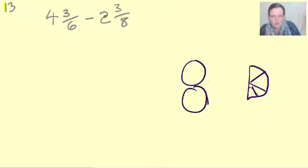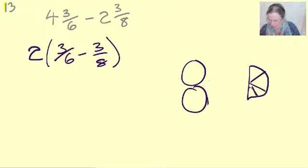So four take away two is two, and then we've got to do 3/6 take away 3/8. Let's put them over the same number. What will they both go into? 24. So two over 24.